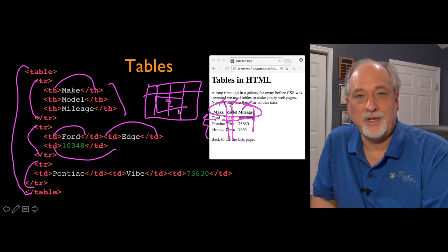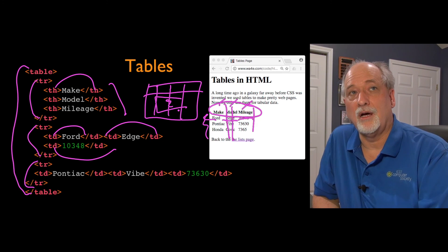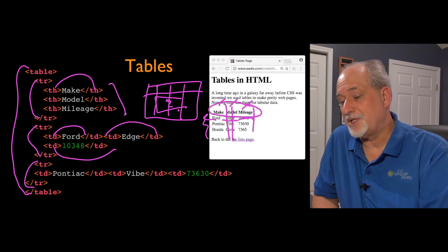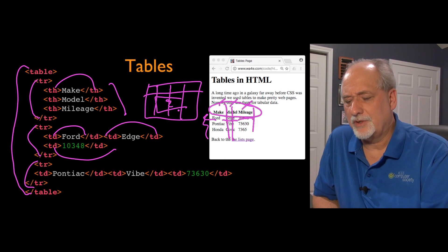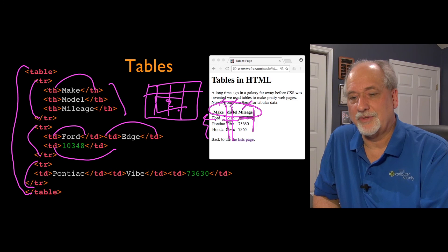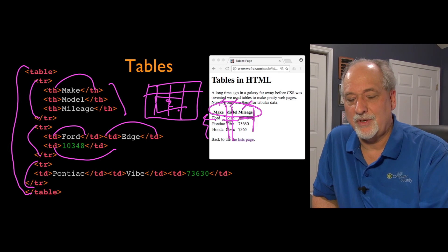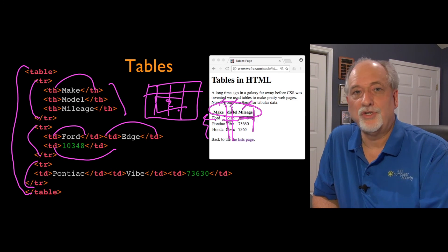There are ways to do things where a data element spans more than one column — a colspan, for example. But the key to tables is that we use them for tables. We don't use them for arranging things that are not themselves tabular data.